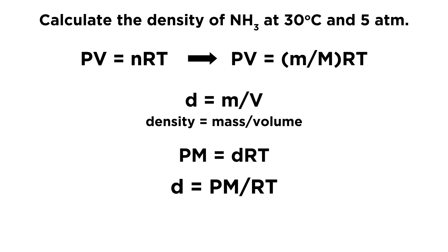Now we just plug in what we know. For pressure, we are given 5 atmospheres. For molar mass, that's going to be the molar mass of ammonia, which is 17 because nitrogen has a mass of 14 and each hydrogen is 1, so that's 17 grams per mole.